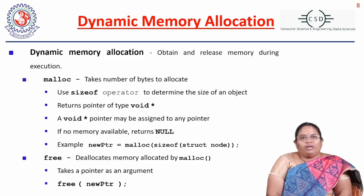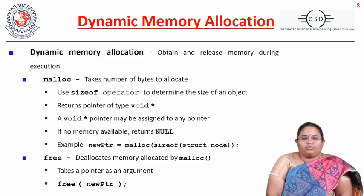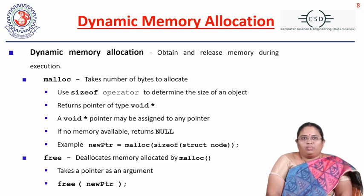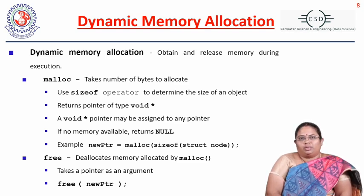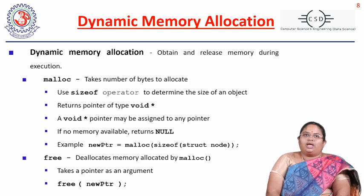For dynamic memory allocation — which is memory allocated at runtime — I am presenting this concept here specifically because for implementing data structure concepts, we have to use two functions. Dynamic memory allocation is very important in implementing data structures, and in this introductory part I will give a brief about these two functions: malloc and free.